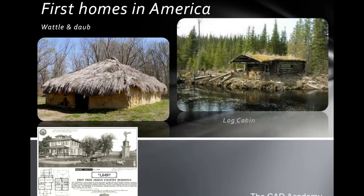The first homes in America had just to do with that — people needed shelter. So they copied the Native Americans and first did wattle and daub homes, basically twig and mud homes. They moved on to log cabins, and then with the industrial age and mass production in the age of Henry Ford, there were actually home kits, and you can see them in the Midwest and they are still there today.